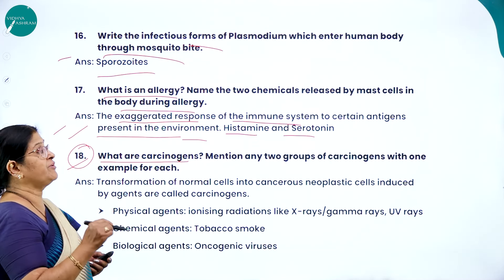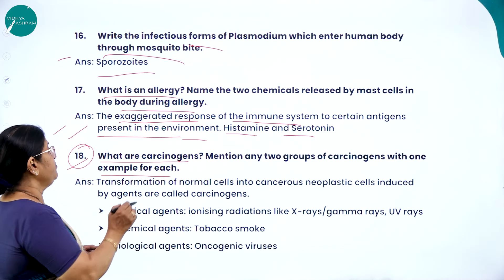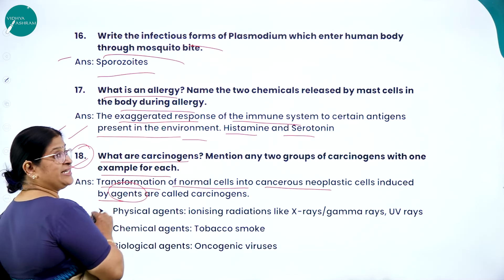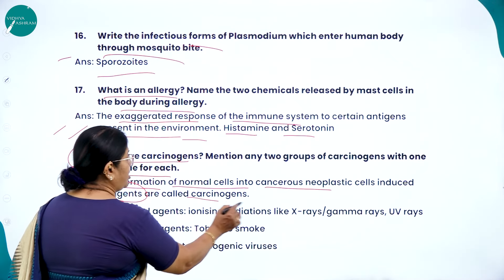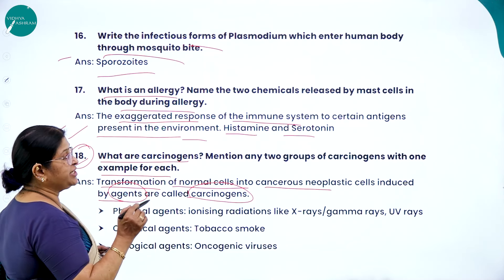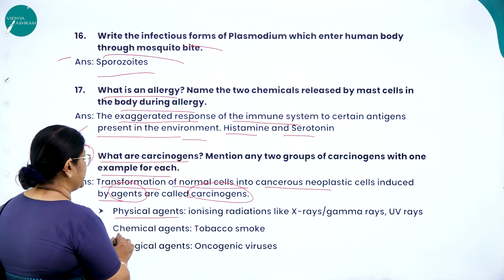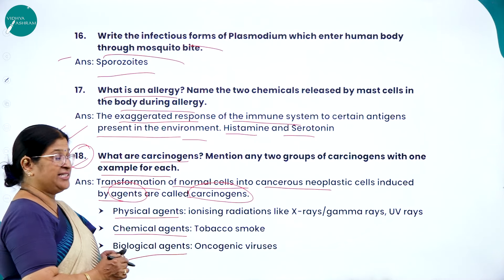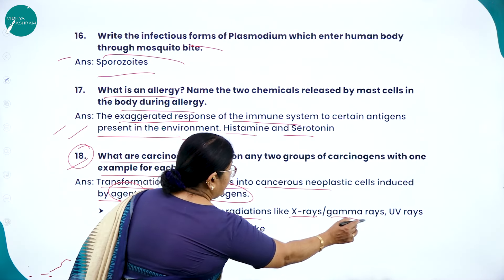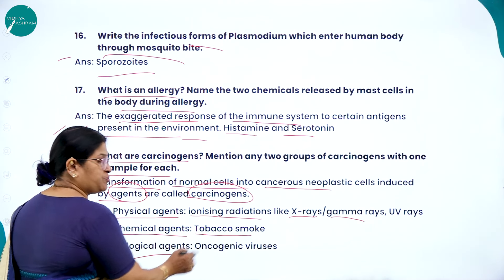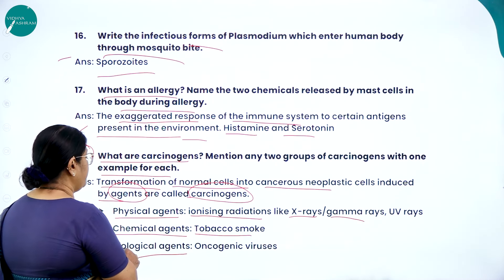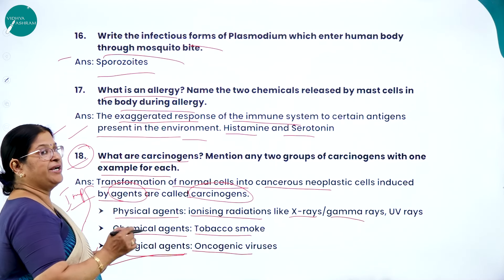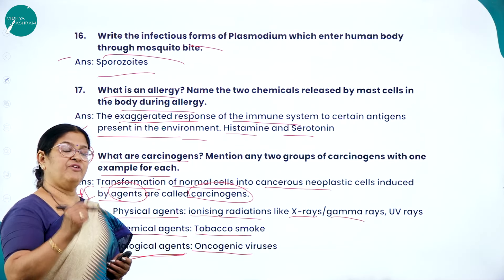What are carcinogens? Transformation of normal cells into cancerous or neoplastic cells is induced by agents called carcinogens — cancer causing agents. Mention any two groups of carcinogens with one example each: physical agents such as ionizing radiations like X-rays and gamma rays; chemical agents such as tobacco smoke; and biological agents such as oncogenic viruses.